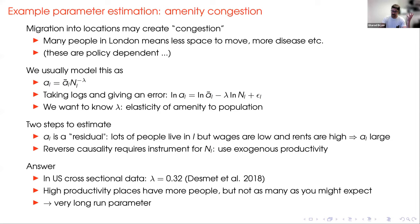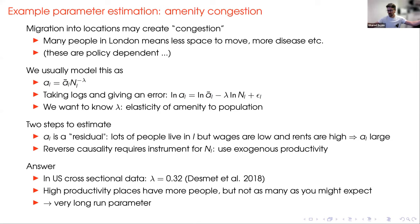If you do this in the United States using a cross section of data at the metropolitan area level, you get something like lambda equals -0.32. That is, the elasticity of amenity to population is minus 0.32 — as a location gets crowded, the amenity goes down. What does this really mean? It says that high productivity places in the United States tend to have more people, but not quite as many as you might expect, so they seem to have low amenity. This uses a cross section of data in the United States and is a very long-run parameter based on the slow movement of people across space in the United States, not in response to a major crisis.